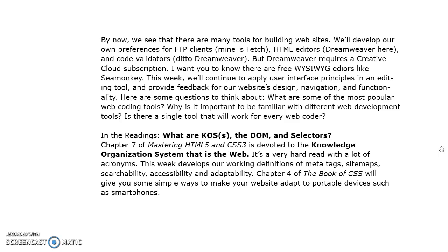In the readings we'll talk about knowledge organization systems more in depth, and then the DOM — what is the DOM? What are selectors? Chapter 7 of Mastering HTML5 and CSS3 is devoted to knowledge organization systems on the web. It's a really hard read with a lot of acronyms in it. We'll continue to develop our skills using some of the unseen parts of web pages, such as meta tags, site maps, and searchability.